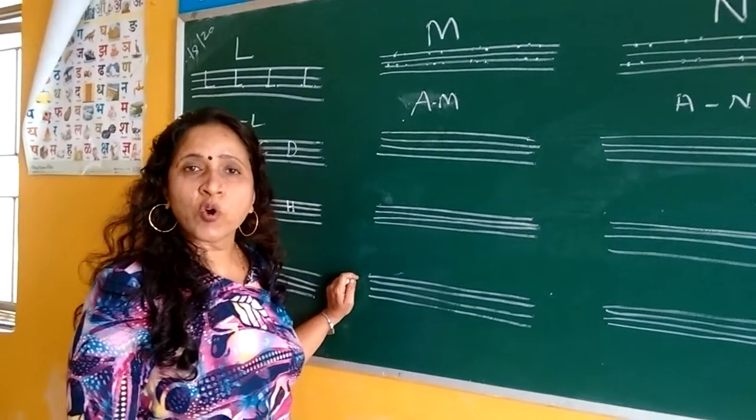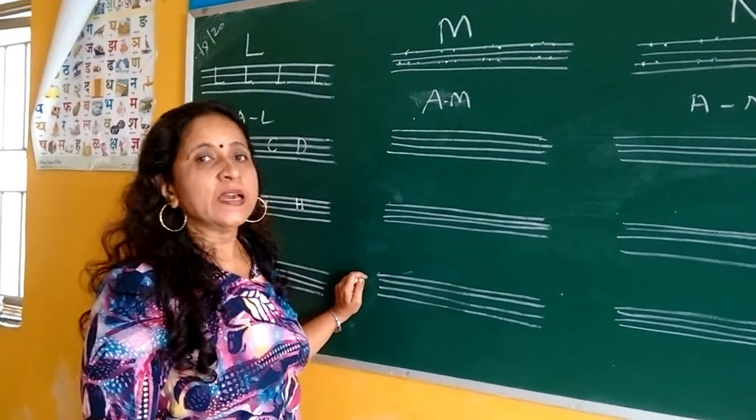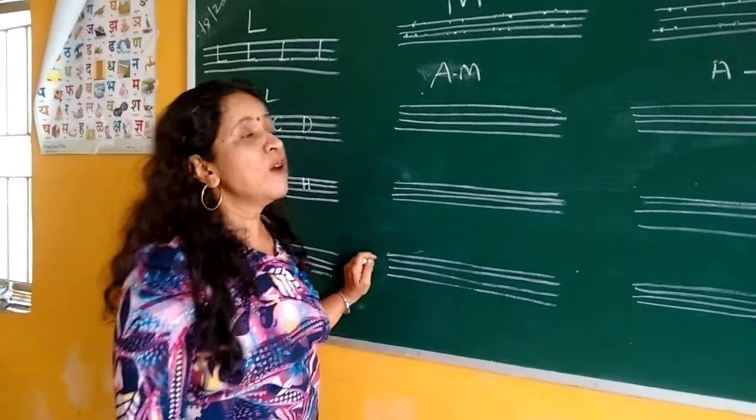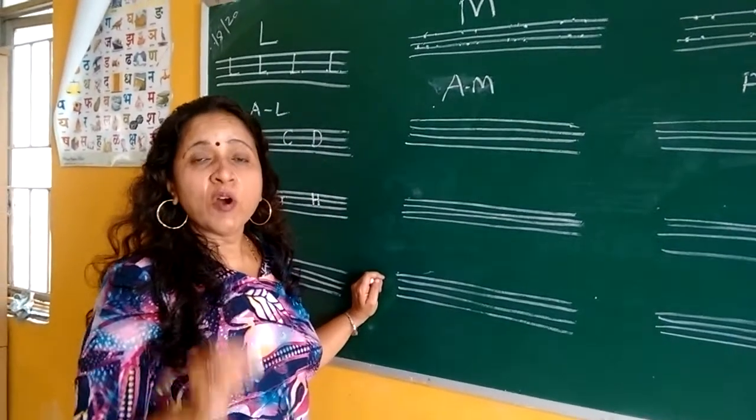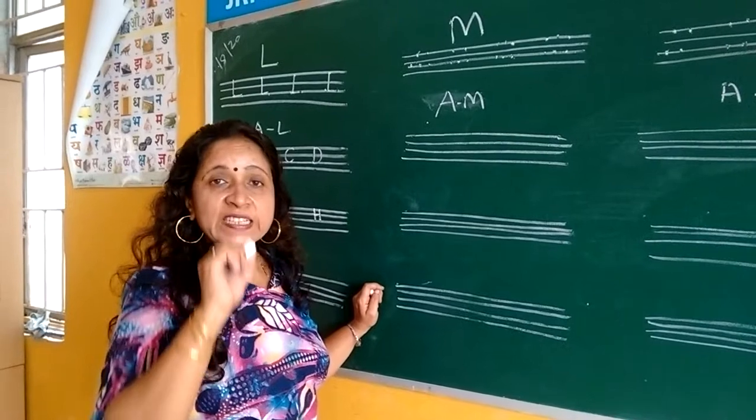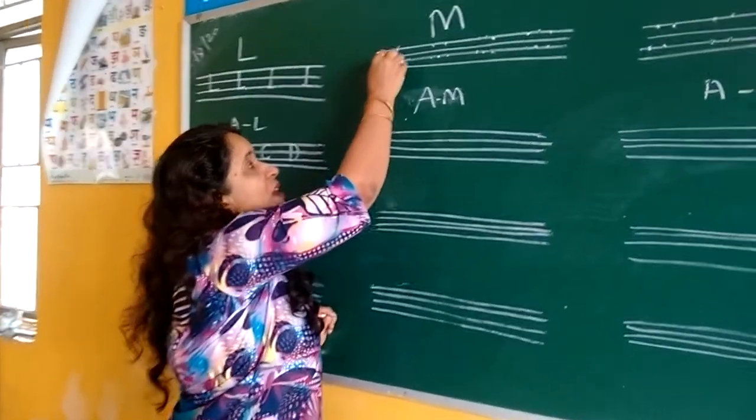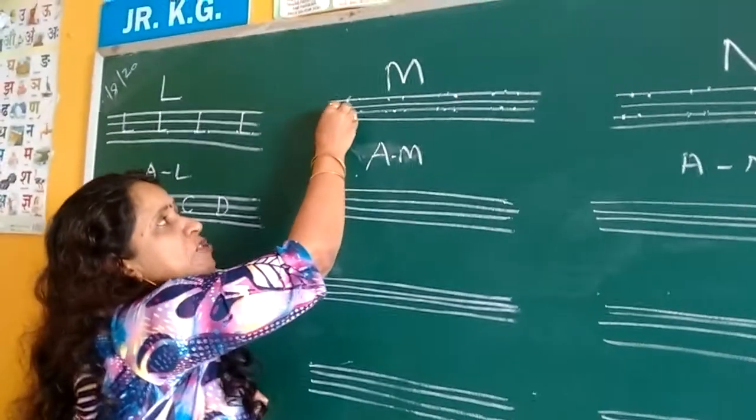Now we will write M for mango, M for monkey, M for moon. How to write M? You know, to write M, zigzag line. Now see, you have to leave the points like this and join it.